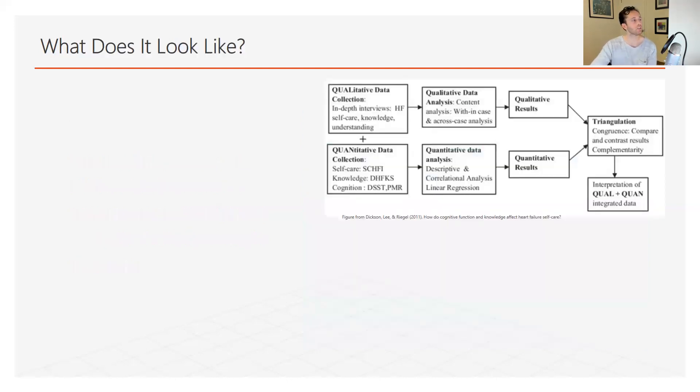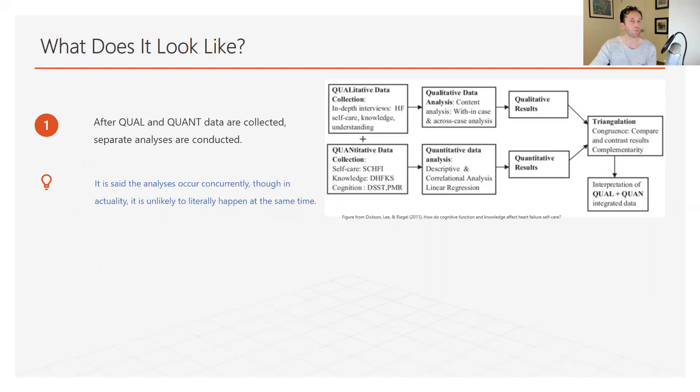What does this design look like? So you can look right here. First off, we're going to be starting, as I mentioned before, separately collecting both quantitatively and qualitatively data at the same time. And then afterwards, and only afterwards, are we going to begin the analysis process. Also, another thing to note is even though these analyses are occurring concurrently afterwards, it's difficult to literally do at the exact same time. So technically, they're going to vary, but it's going to be done over the same period of time.